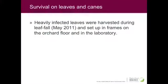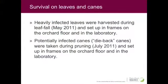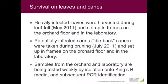Let's look at survival on leaves and canes. The experiment consisted of picking up leaves that were infected from naturally infected orchards during the fall. They were separated into two groups: one kept in frames in the orchard, and the other brought into the laboratory. Similarly, we took canes associated with dieback — called potentially infected canes. On a regular basis, every week, we took four leaves and four canes and isolated bacteria onto a medium, confirming that what we isolated was living PSA using a PCR protocol.